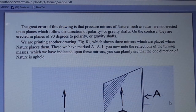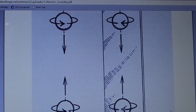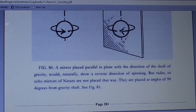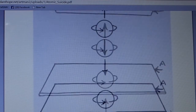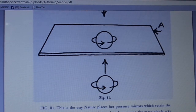We are printing another drawing, figure 81, which shows three mirrors placed where nature places them, marked A-A. If you note the reflections of the turning masses indicated upon these mirrors, you can plainly see that the one direction of nature is upheld. A mirror placed parallel in plane with the direction of the shaft and gravity would naturally show a reverse direction of spinning — but radar or echo mirrors of nature are not placed that way. They are placed at angles of 90 degrees from the gravity shaft. This is the way nature places her pressure mirrors, which retain the same direction of spinning in the mirrors that they spin in the mass which acts upon them. There is no exception to this law throughout all nature.